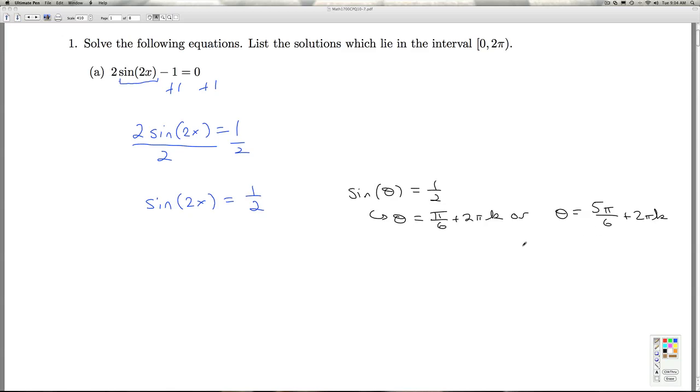So I've come back to here then, and the sine of something is 1/2, so I know that something, the argument of the trig function there, 2x, is either equal to π/6 plus 2πk,